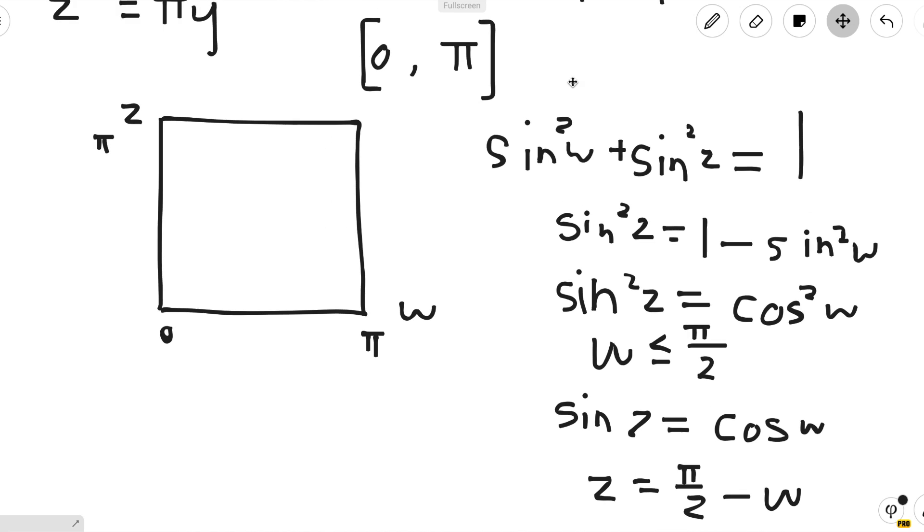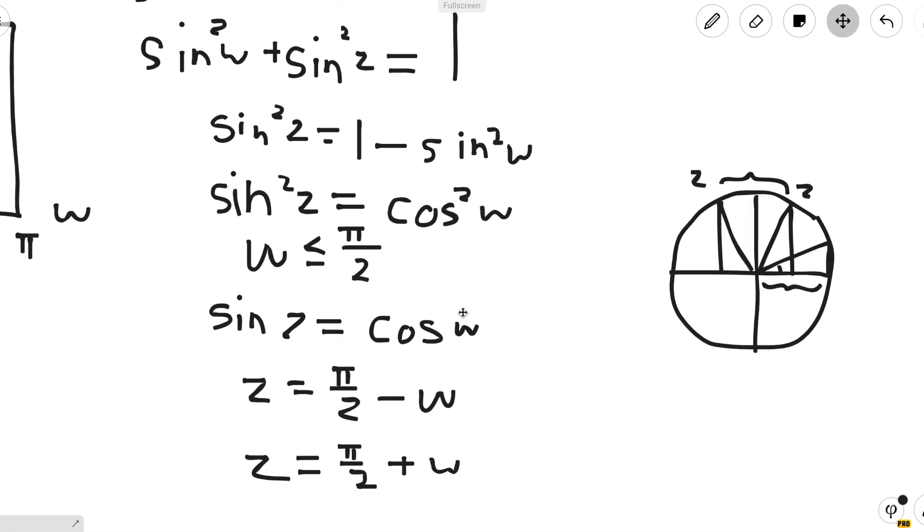So looking back at our diagram, at π/2 we can draw two lines, one with negative slope and one with positive slope. And the values in this triangular region will all satisfy the inequality.